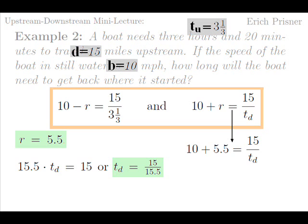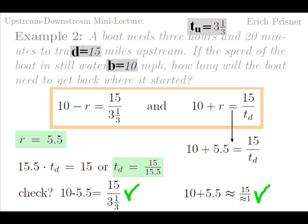Does it check? Since b equals ten and r equals five point five, the upstream and downstream speeds are ten minus five point five, which is four point five, and ten plus five point five, which is fifteen point five. And yes, four point five equals fifteen over three one third. And it seems reasonable that fifteen point five is about fifteen over about one.